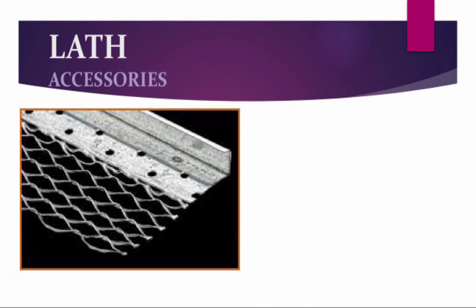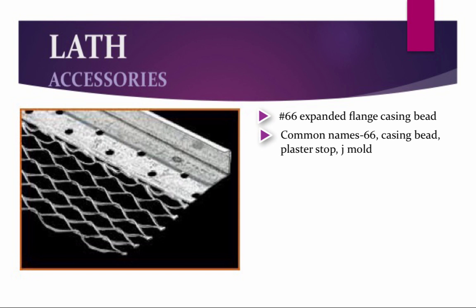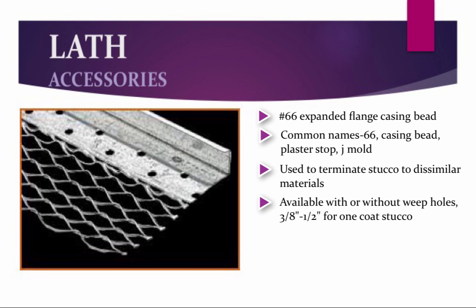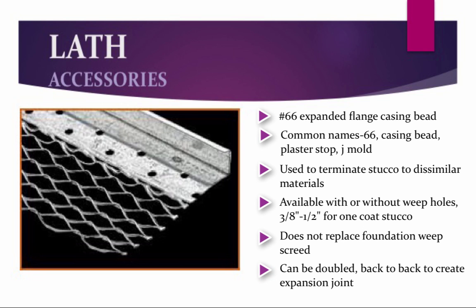Our next part is the number 66 expanded flange casing bead — common names are 66, Casing Bead, Plaster Stop, or J-Mold. This is used to terminate stucco to dissimilar materials. Casing beads are available with or without weep holes from three-eighths inch to half inch for one-coat stucco and larger for conventional stucco. Custom parts may be made to fit one-coat or conventional stucco with foam insulation behind the cladding. This part may not be used to replace foundation weep screed. Casing bead can be doubled back-to-back to create an expansion joint, but this must be caulked.